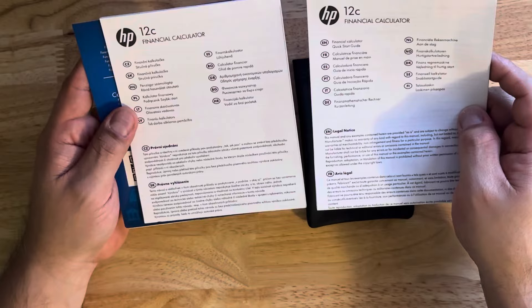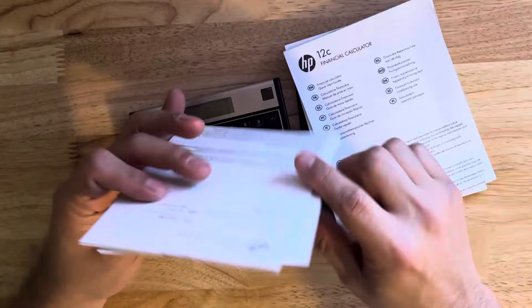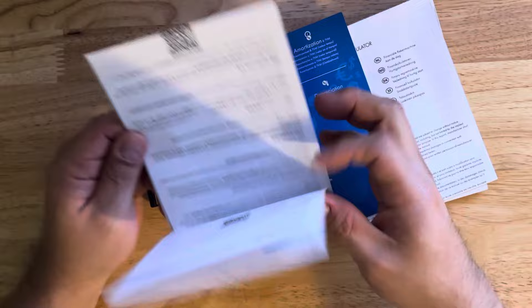Let's look at this first. What we have here, we have financial calculator instructions. We have two of them. And I'm assuming one of them is in a different language right there. And then we have this one here. Let's see. Another just brochure details.